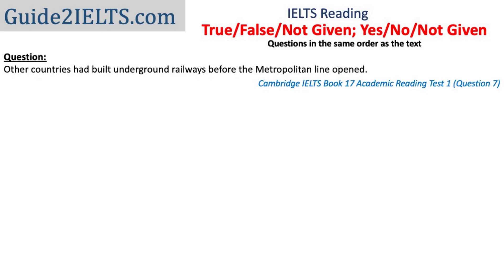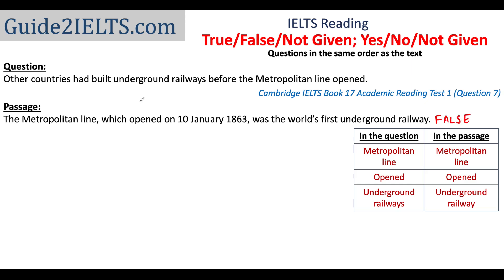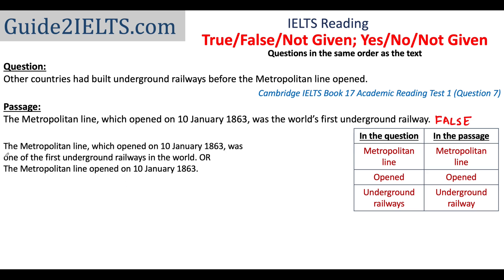Let's understand this rule using an example. The question says: 'Other countries had built underground railways before the metropolitan line opened.' The answer is False because the passage says the metropolitan line was the world's first underground railway, so no other country had built underground railways before. But if the passage had said the metropolitan line was 'one of the first' underground railways, or just mentioned when it opened, the answer would be Not Given — because we cannot say for sure whether it was the first one or not.